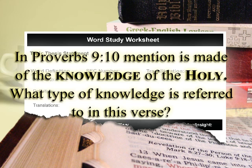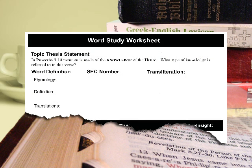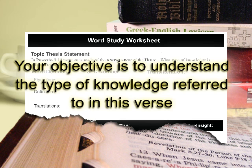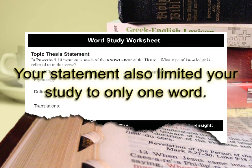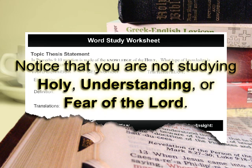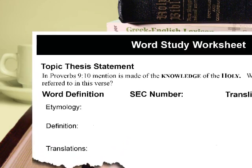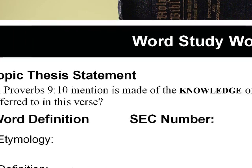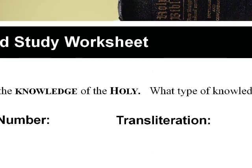Under the subtitle of Topic Thesis Statement you might record this topical question: 'In Proverbs 9:10, mention is made of the knowledge of the holy. What type of knowledge is referred to in this verse?' Notice that your topical thesis statement sets the goal, objectives, and parameters of your study. Your objective is to understand the type of knowledge referred to in this verse. Your statement also limited your study to only one word. Notice that you are not studying 'holy,' 'understanding,' or 'fear of the Lord.' A good topical thesis statement must set clear goals and parameters.